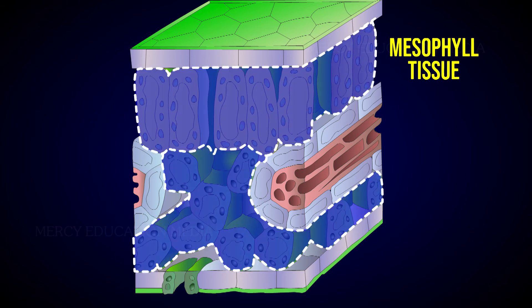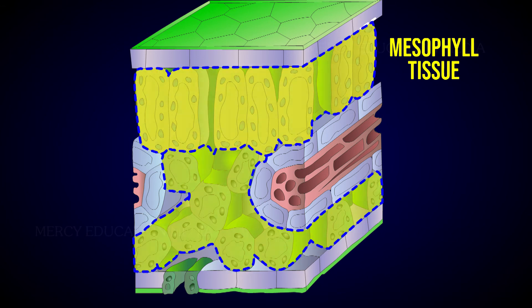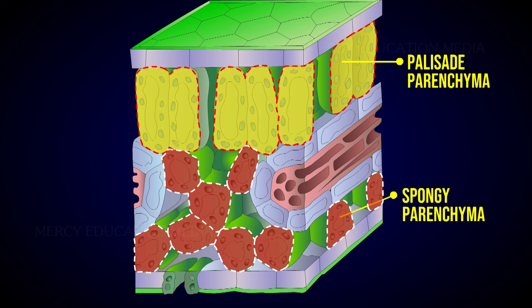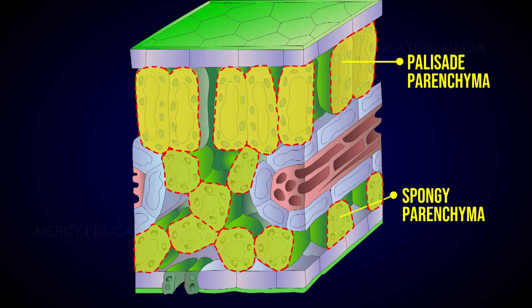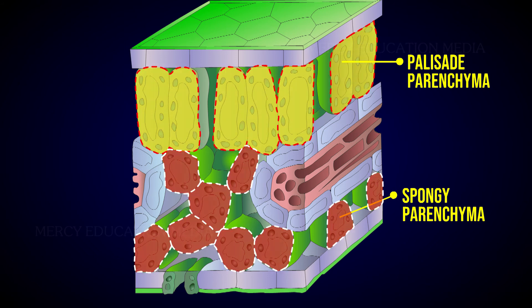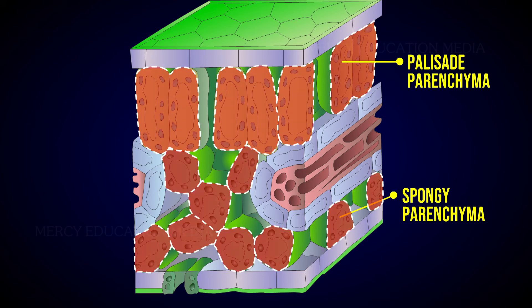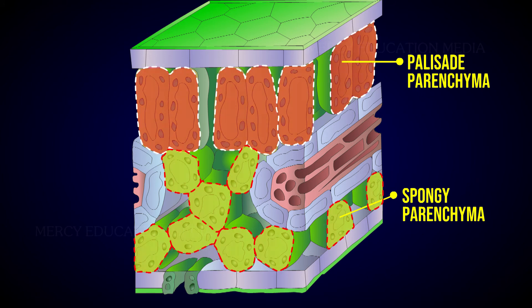A leaf showing this differentiation in mesophyll is designated as dorsiventral. It is common in dicot leaves. If mesophyll is not differentiated, made of only spongy or palisade parenchyma as in monocots, it is called isobilateral.